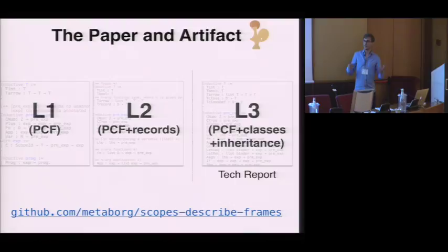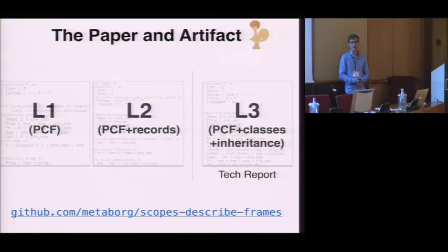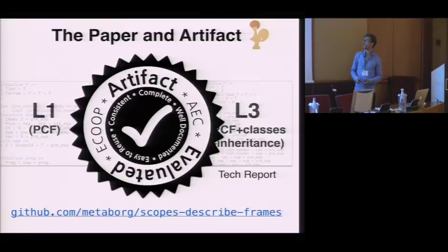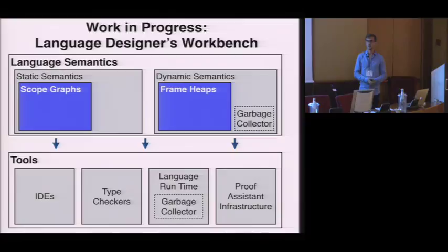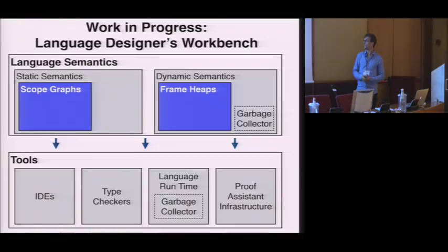To showcase our approach, we've applied it to three example languages with both functional and object-oriented features, including classes, inheritance, and subtyping. They're available at the URL on the slide, and everything has been implemented in Coq. In particular, we have formalized language-independent lemmas for scopes and frames and the correspondences between them. Work in progress includes implementing support for deriving tools from specifications — such as IDEs, type checkers, language runtimes with garbage collectors, and proof-assistant infrastructure — implementing this in the language designer's workbench Spoofax.